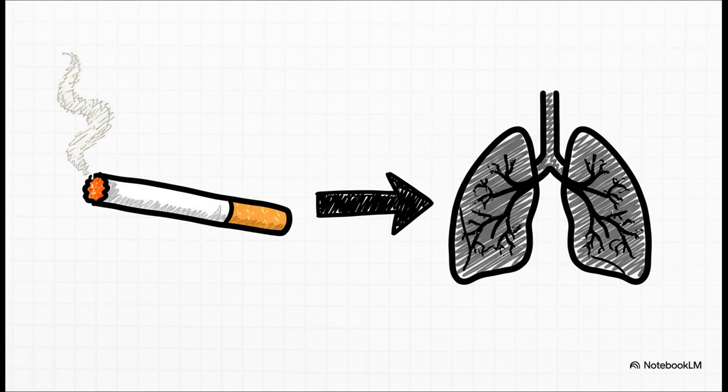The classic example we all know is smoking and lung disease. Let me ask you, is a person's chance of getting lung disease the same whether they smoke or not? No way, of course not. Event A, being a smoker, dramatically ramps up the probability of event B, getting lung disease. These two things are deeply and dangerously dependent.